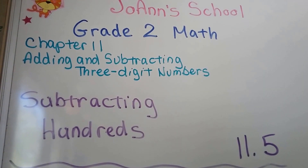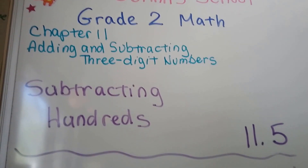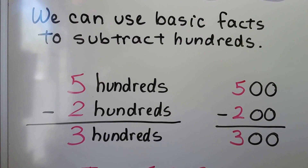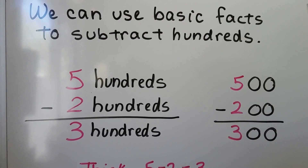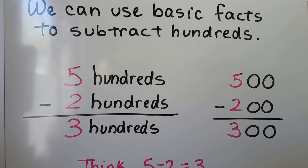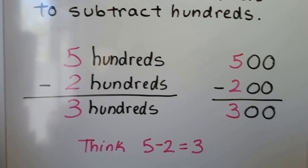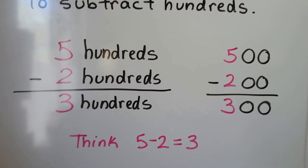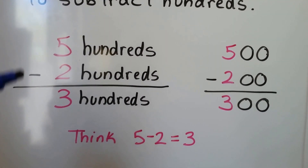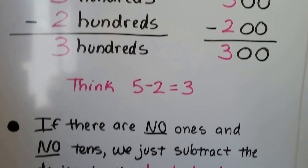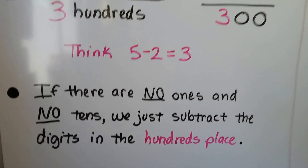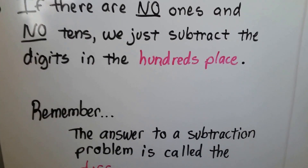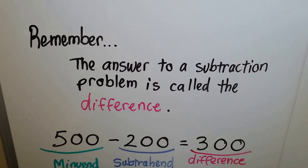We're going to be subtracting hundreds in this video. This is lesson 11.5. We can use basic facts to subtract hundreds, just like we did with addition. We have five hundreds and we're subtracting two hundreds — five hundred minus two hundred is three hundred. We know the tens and ones places are zeros, so we just think five minus two equals three. We subtract the digits in the hundreds place.